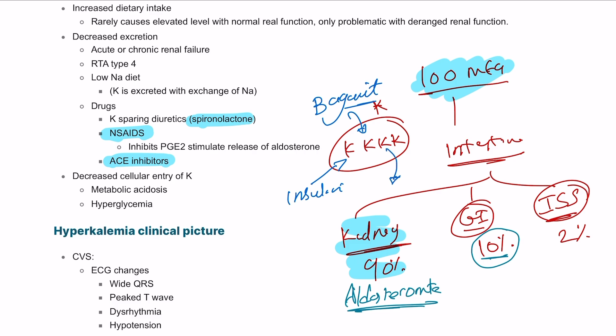Also, a shift of potassium to outside the cell can happen with metabolic acidosis and hyperglycemia.